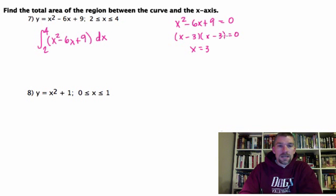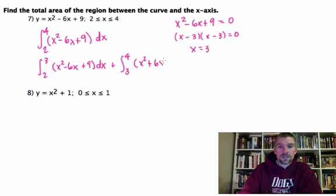So what we want to do then is we want to split this integral into two pieces and look at the absolute value of each piece. We're going to look at the integral from 2 to 3 of x squared minus 6x plus 9 plus the integral from 3 to 4 of x squared plus 6x plus 9. So these are the two things that we're looking at.